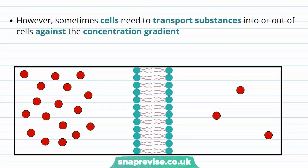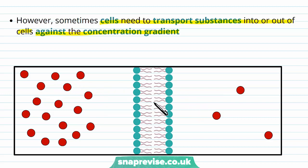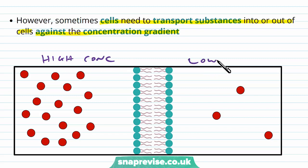However, there are occasions where cells need to transport substances into or out of the cell against their concentration gradient. This is a bit different, but sometimes it's required — for example, to set up a concentration gradient for neurons. So this time we have our high concentration and low concentration area again, but this time we're moving particles up their concentration gradient, so it's kind of pushing them uphill.